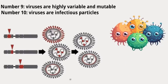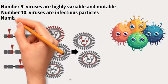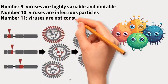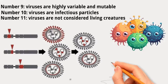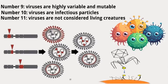Number ten: viruses are infectious particles. When outside of a host cell, viruses exist as infectious particles called virions, which are capable of infecting other susceptible host cells. They can be transmitted through various means such as air, bodily fluids, or direct contact. Number eleven: viruses are not considered living creatures, because they lack essential characteristics of life such as the ability to carry out metabolic processes and reproduce independently.